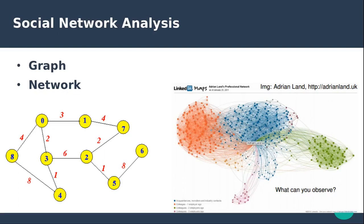In the previous lecture, we introduced the concept of a graph and a network, and we established that the difference is just in the terminologies. In a graph, it's called vertices and edges, while in the case of networks, we have nodes and connections.